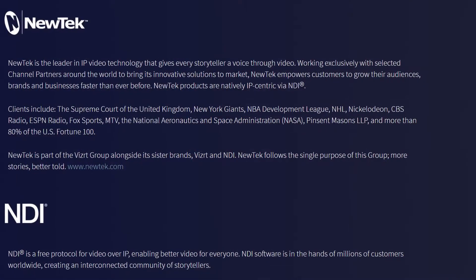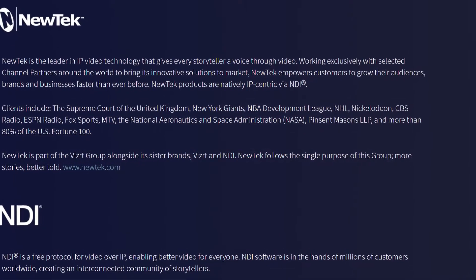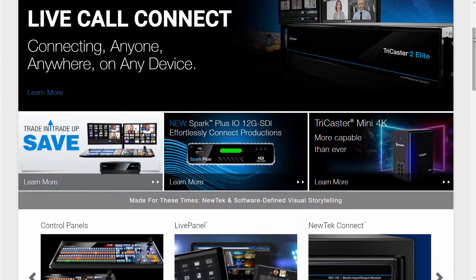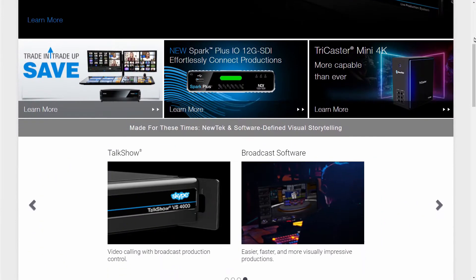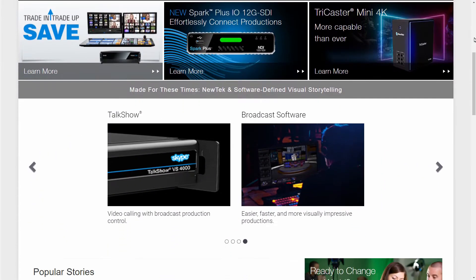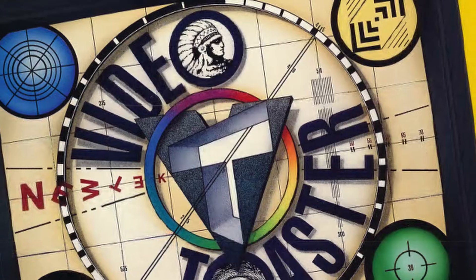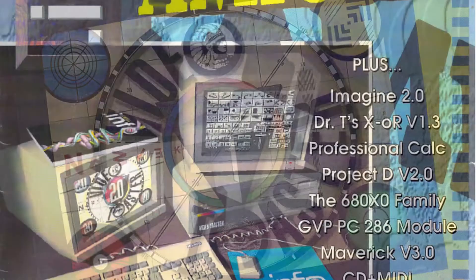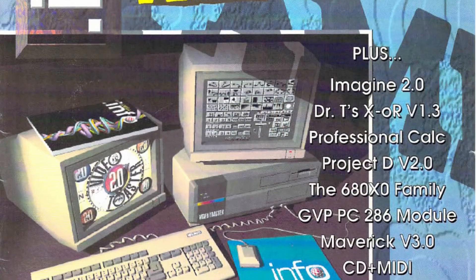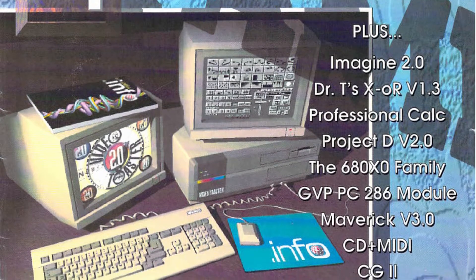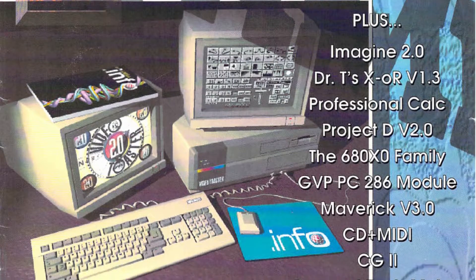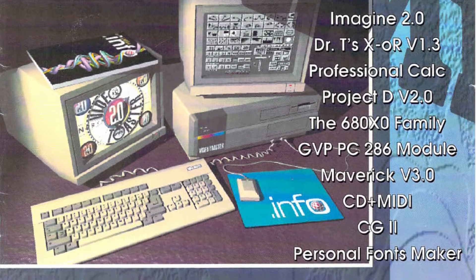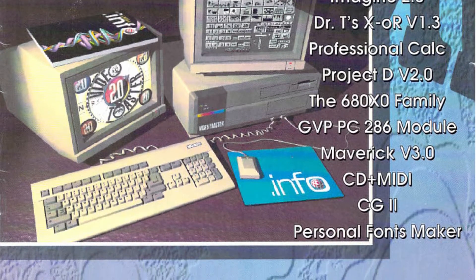Here's a little history on the company. NewTek is a Texas-based company that specializes in software and hardware for live and post-production use. They are famously known for the Video Toaster, a low-cost system that was able to replace a $100,000 video production system with a $4,000 computer, released back in the nineties.